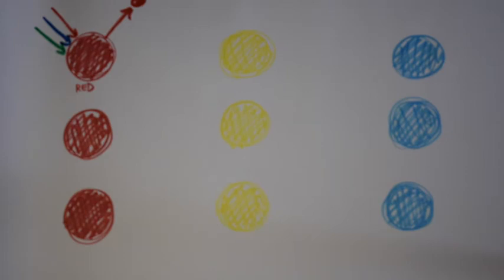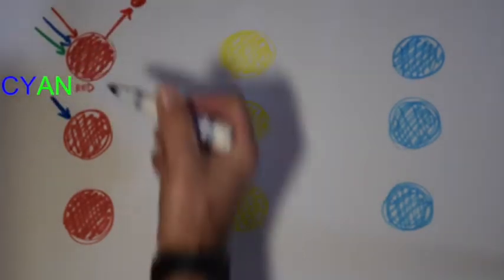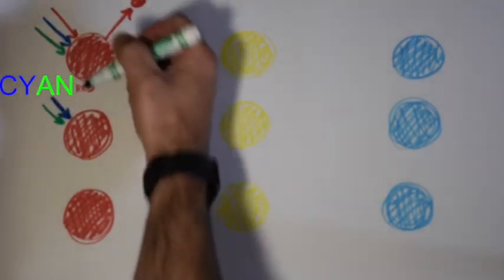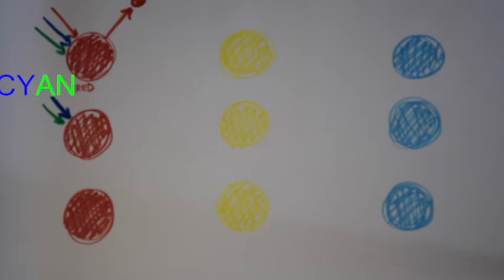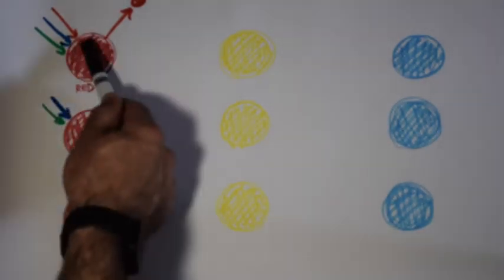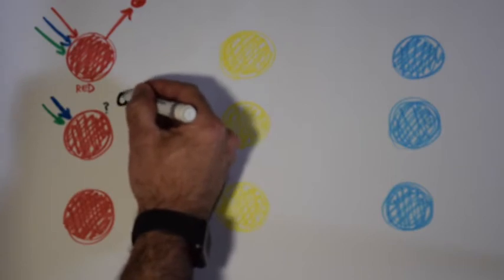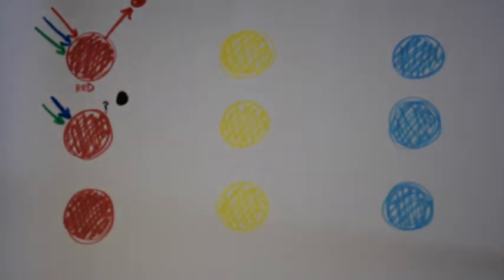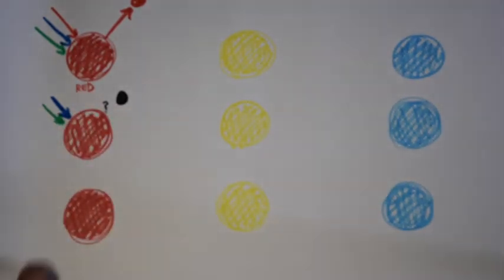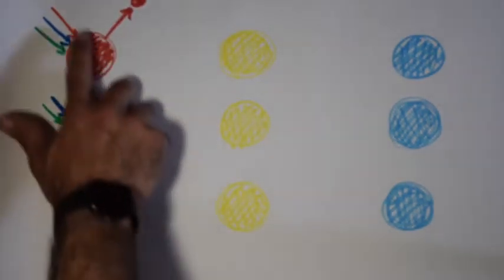Where things get more complicated: what would something look like under different light? What if we shine cyan light on a red surface? Cyan is blue and green together. What's going to reflect? Nothing — we just saw that blue and green are absorbed. There is no red there to reflect, and if nothing is reflected, we would see black. So what we'd typically call a red surface would appear black under cyan light — and also under blue light or green light, because if there's no red light present, there's nothing to reflect.